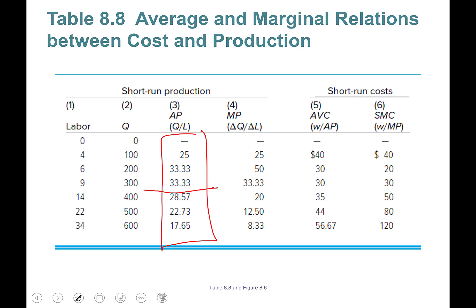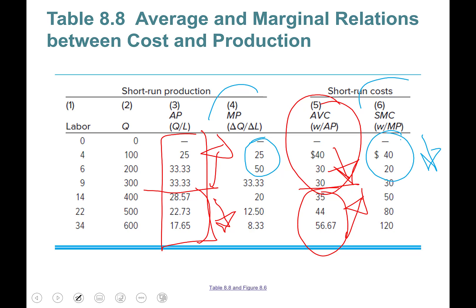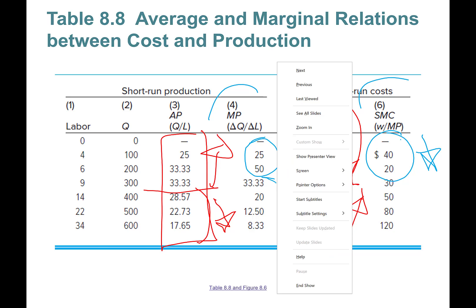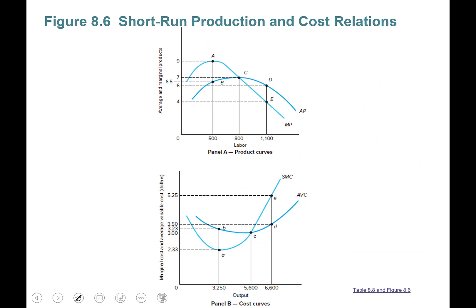Average product first increases, which is good — then it decreases. When it's increasing, average variable cost is going down. Then when average product starts going down, average variable cost starts picking up. The same relationship holds for marginal product and marginal cost: marginal product is increasing, meaning the last worker is contributing more than the previous one, so marginal cost is declining. Then marginal product starts going down — diminishing returns to labor — and you see an increase in marginal cost.